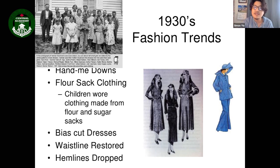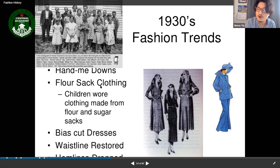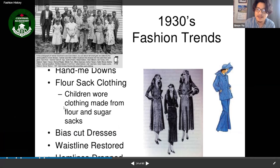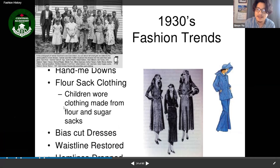In the 1930s, hand-me-downs were a fashion trend. Another trend was flour sack clothing — people would wrap themselves in large flour or rice sacks tied with string or rope as clothing. It was a reflection of very difficult economic times during the Depression.